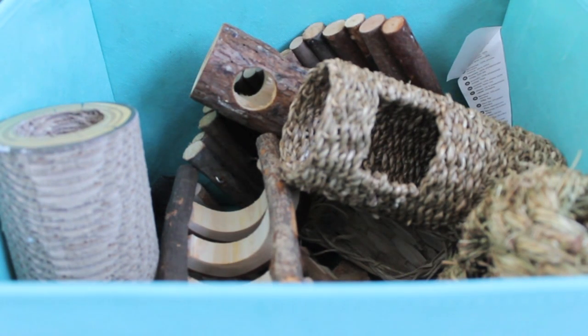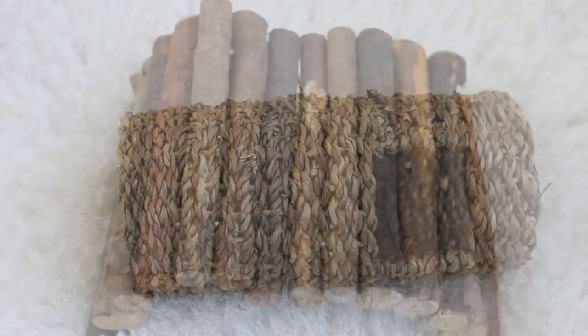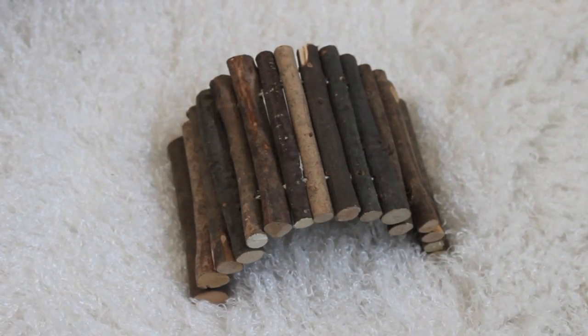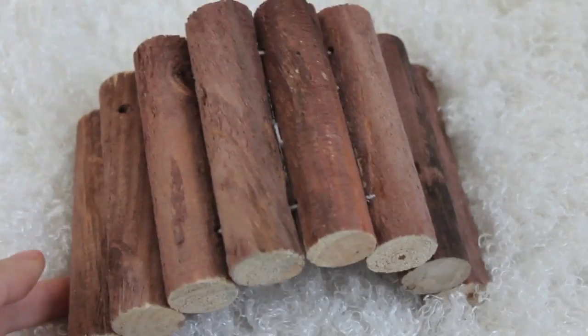I am now going to move onto the box which is full of the natural toys, and these are all natural and not colored with any dyes or anything. First of all we have this seagrass tunnel from the naturals range. And then I have another bendy log bridge from Via Vet, it was like 80p so it was very cheap but they have gone up in price now. We then have this other bendy log bridge and this is just a natural chunky one.